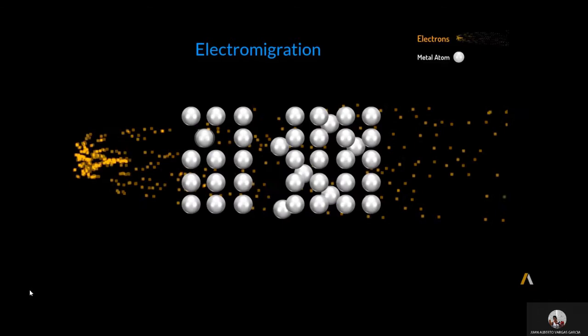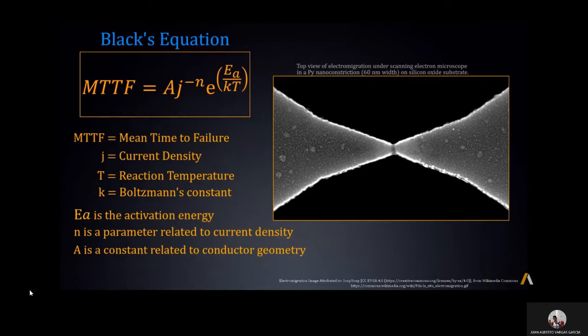This electro-migration effect is often modeled by Black's equation, a probabilistic model that predicts the mean time to failure, or MTTF, as a function of the current density and the temperature.